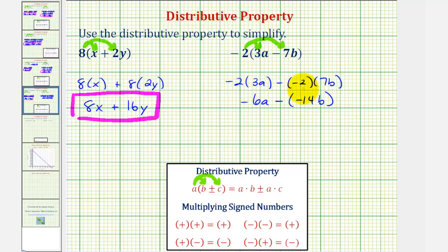So while this is correct, we normally would not leave it in this form. Notice here we have minus negative 14b. Subtracting a negative is the same as adding a positive. So it's better to write this as negative 6a plus 14b.